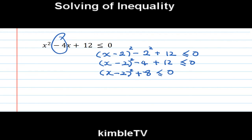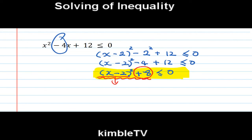Do you think this is right? Not true. Because X minus 2 squared plus 8 is always positive — try putting any number into X, it will always be positive. Therefore this inequality is not true, and we say X is undefined.